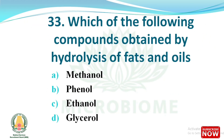Next question: which of the following compounds is obtained by hydrolysis of fats and oils? The options are methanol, phenol, ethanol, and glycerol. The right answer is option D, glycerol.